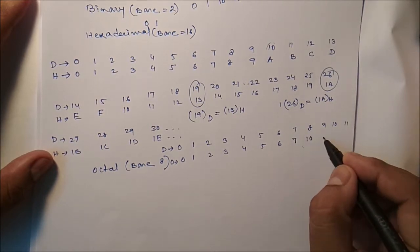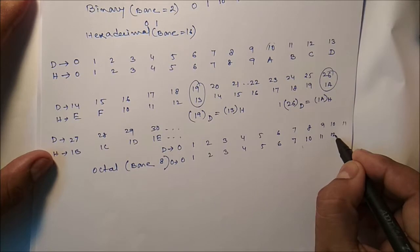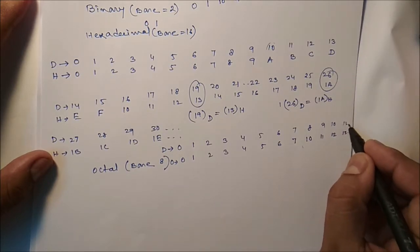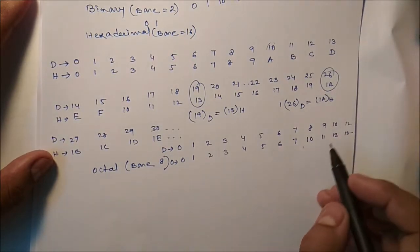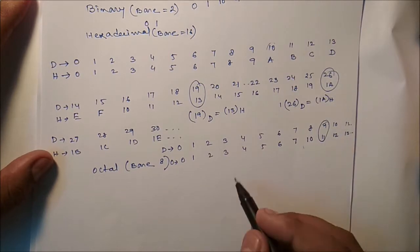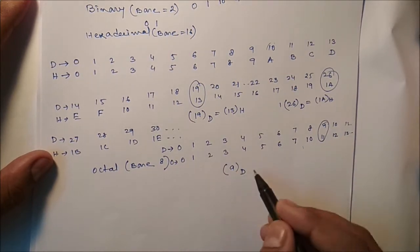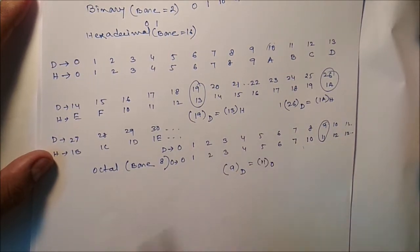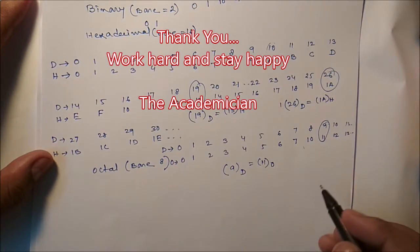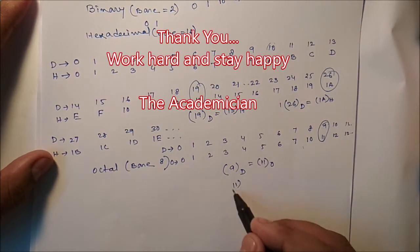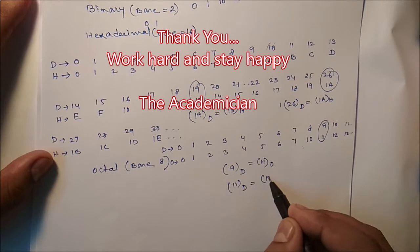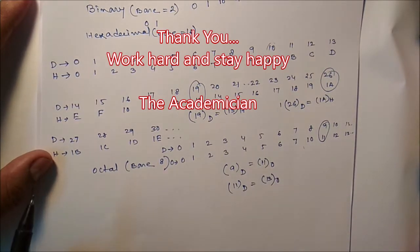After 7, it should be 10, 11, 12, 13 and so on. That means if you see this one decimal 9 is equal to 11 in octal. Similarly, 11 in decimal is same as 13 in octal. Clear?